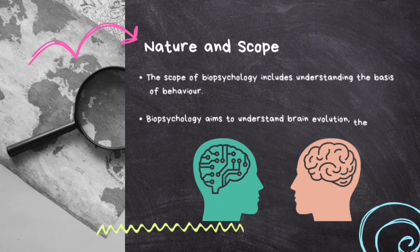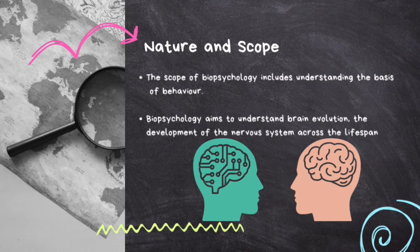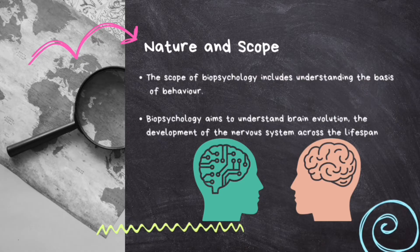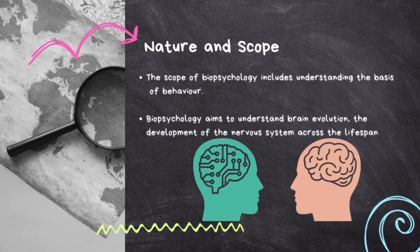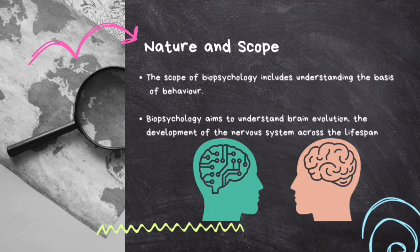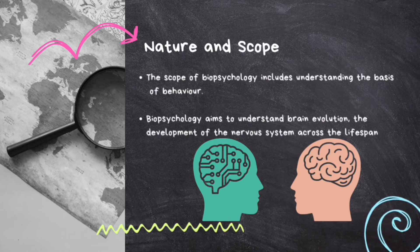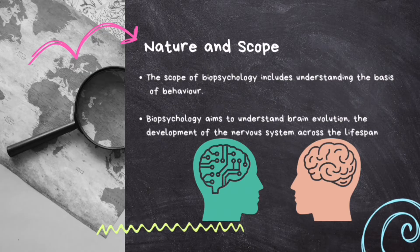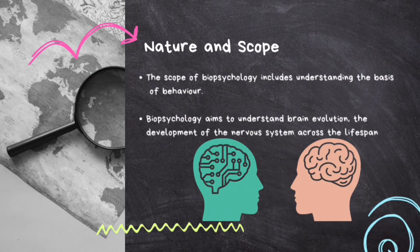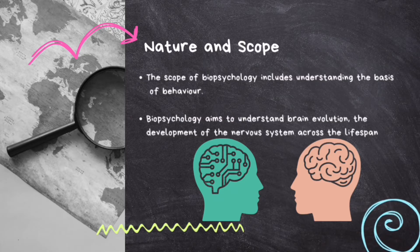The scope of biopsychology is huge and dynamic. We are talking about understanding how our brains and behavior work together, and how things like head injuries, learning, and even exercise routines influence our behavior. Genetics and the endocrine system also step into the spotlight, helping us understand neurological disorders and overall well-being from a biological perspective. It also aims to understand brain evolution, how the nervous system develops throughout our lives, and the specific parts of the brain that control our senses, memory, and movement.